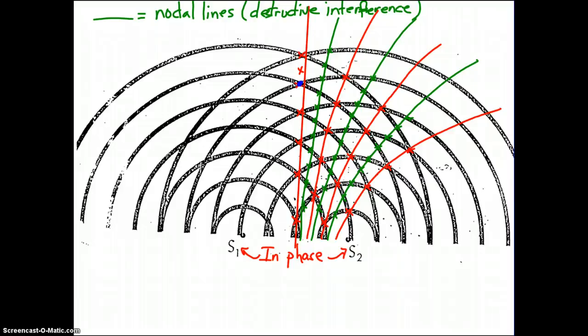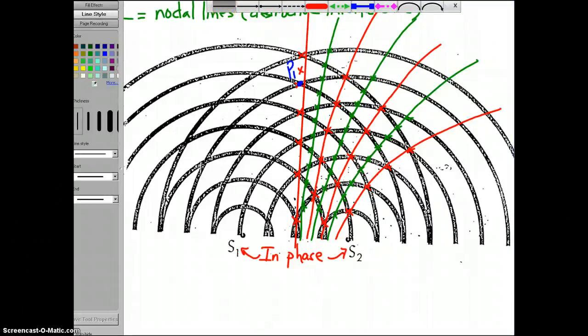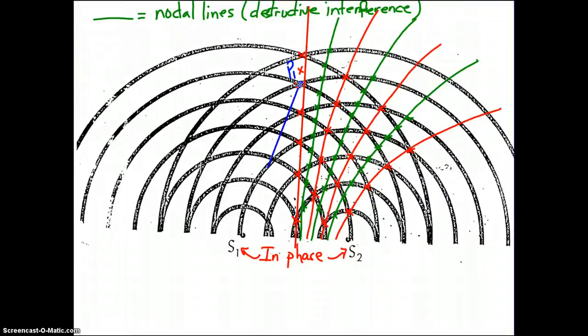And I'm going to call that point, that blue point I just laid, I'm going to call it P1. Now what I'm going to do is I'm going to take and I'm going to draw a line segment from source 1 to P1 and from source 2 to P1. Let's see if I can pull that off a little bit better than my other line. So from P1 to S1 and from S2 to P1.